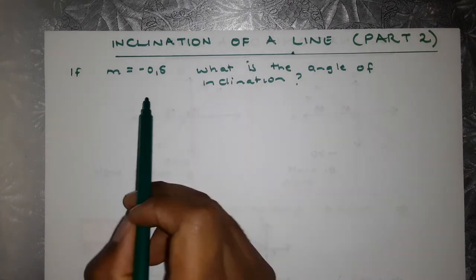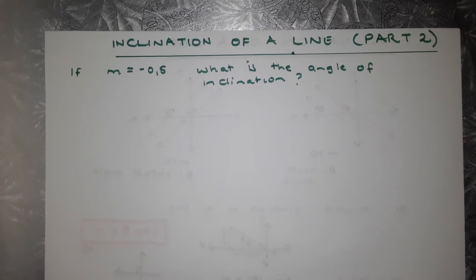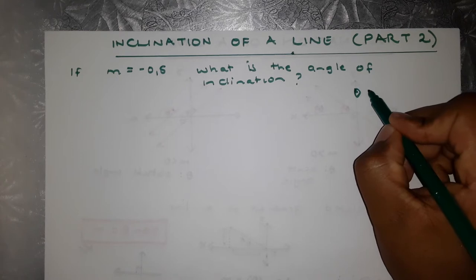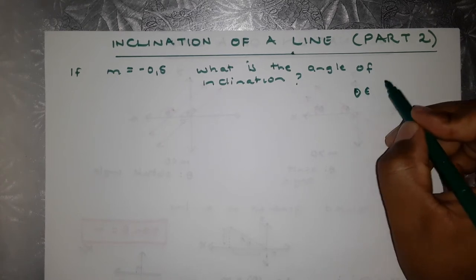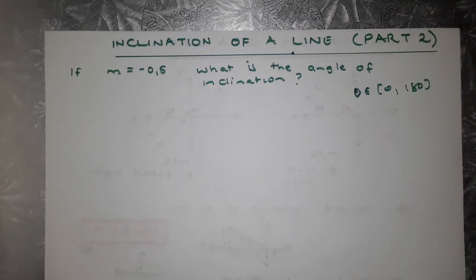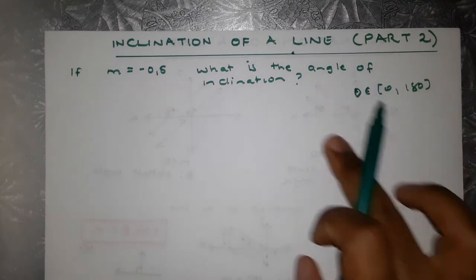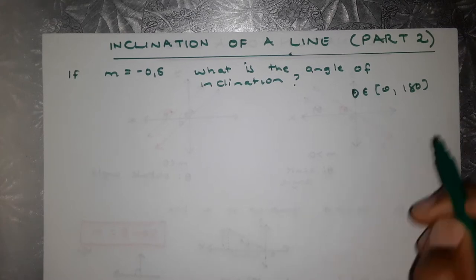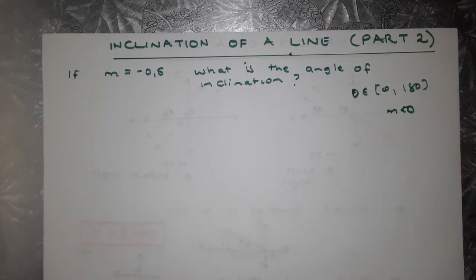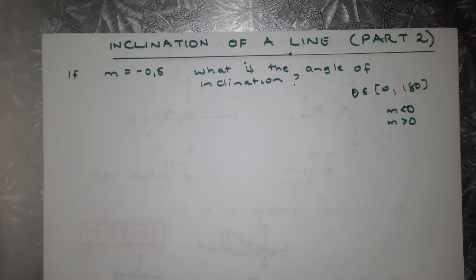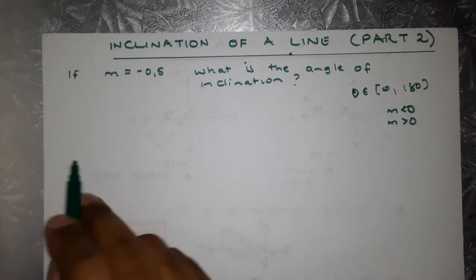If m equals negative 0.5, what is the angle of inclination? Something I forgot to mention is that the angle of inclination will be from 0 to 180 degrees. So if you get an angle which is not in this range, then you must do something. When your gradient is negative, you're going to get an obtuse angle, and when your gradient is positive, you're going to get an acute angle. Let's dive right into it.